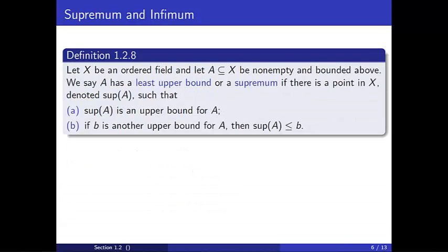Let X be an ordered field, and let capital A be a non-empty subset of X, which is bounded above. We say A has a least upper bound, or a supremum, if there is a point in X, which we denote sup of A such that the sup of A is an upper bound for A, and if B is another upper bound for A, then the sup of A is less than or equal to B.